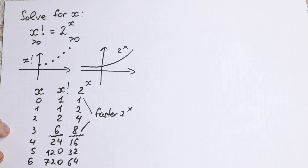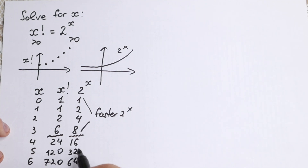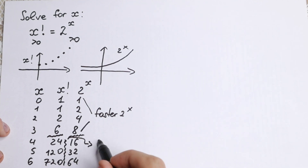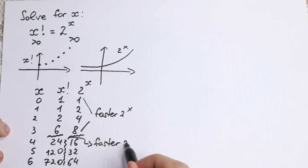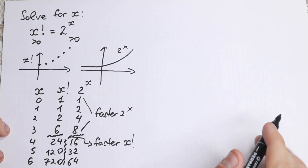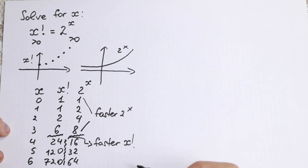After this moment, the factorial function grows faster: 24 is greater than 16, then 120, then 720 — x factorial grows so much faster here. So the factorial function grows much faster than the exponential function beyond this point.